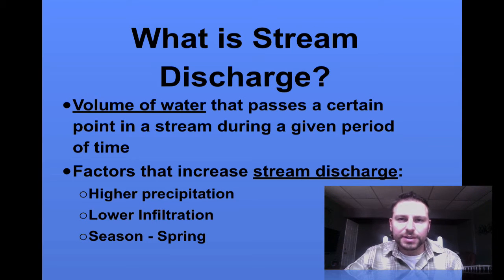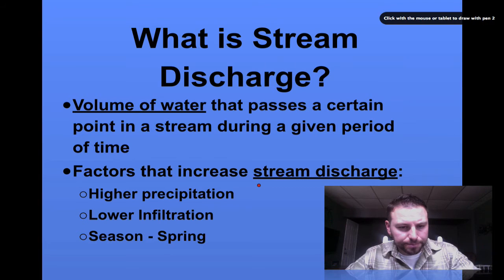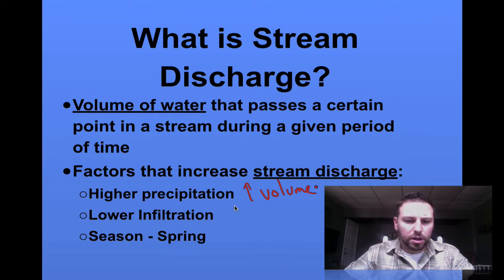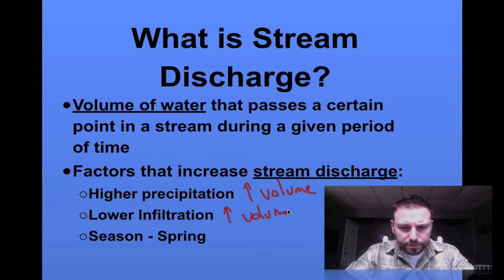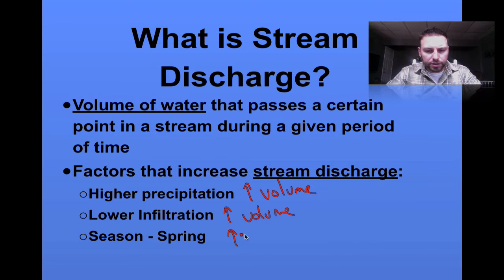Stream discharge is basically the amount of water that's going to pass through a given point in a period of time. There are a number of things that can increase stream discharge. If we increase precipitation, we have more water, so that increases the volume, and increasing the volume increases our discharge. Lower infiltration will also increase volume. Seasons like spring or melting of snow all increase volume, and there are some other things too that can increase stream discharge.